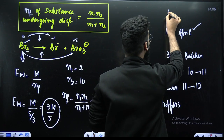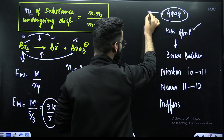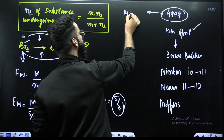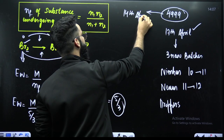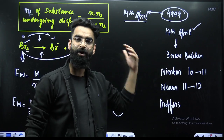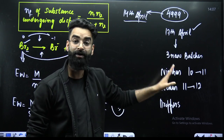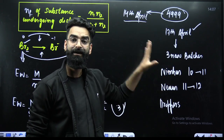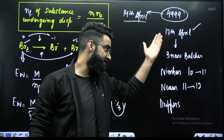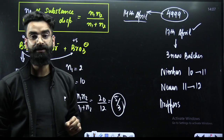The cost of each batch is ₹4,999 at this point in time, and this offer is only valid till 14th April. The three batches are: Nimbus (for 10th moving to 11th), Nexus (for 11th moving to 12th), and a Droppers batch. Click the link in the description and take the Plus subscription to get access to all three batches starting 17th April.